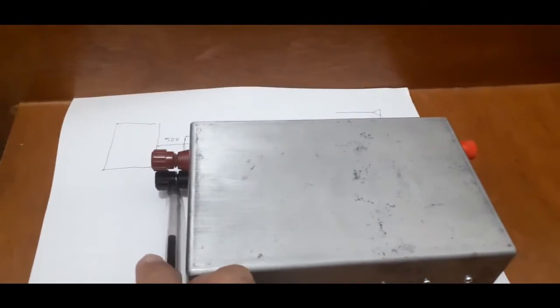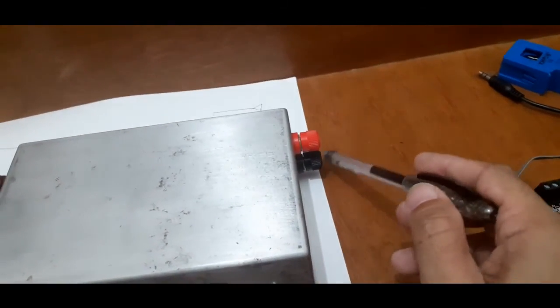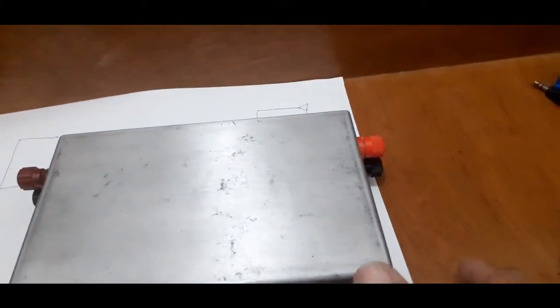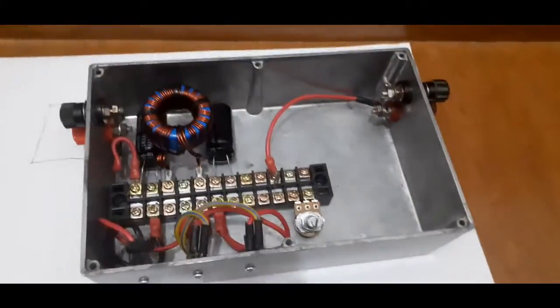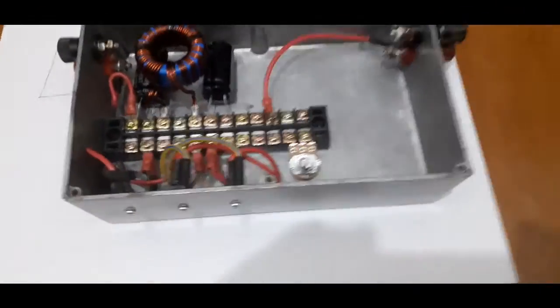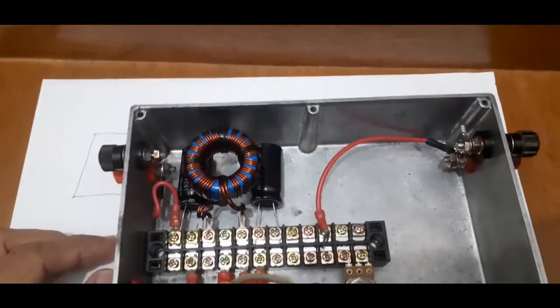This is the input from the solar panel, and this is the output going to the grid tie inverter. So as you can see, it's not yet finished. I still need to complete the wiring.